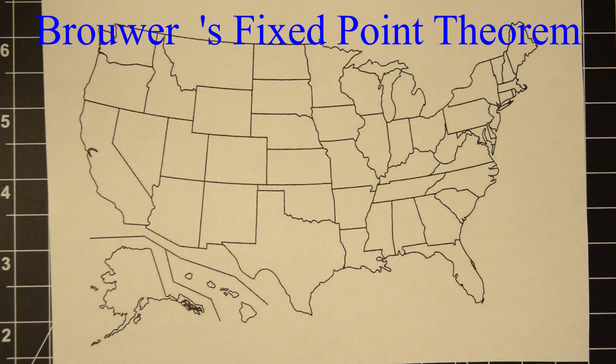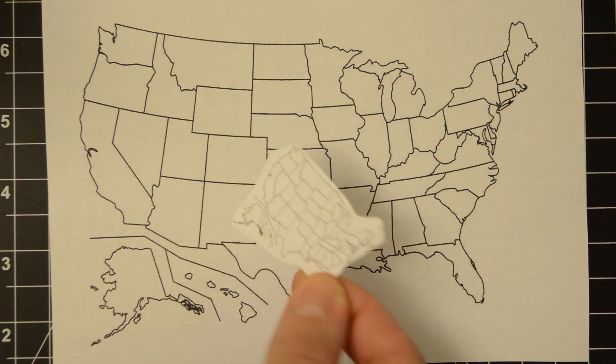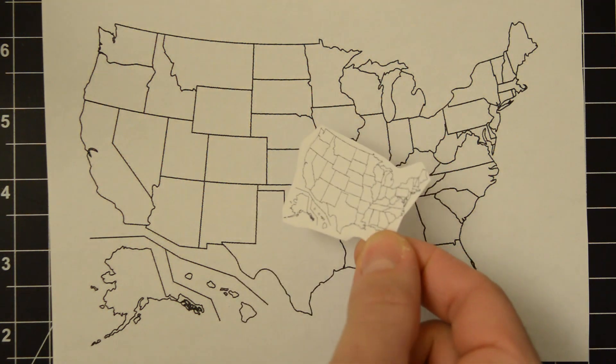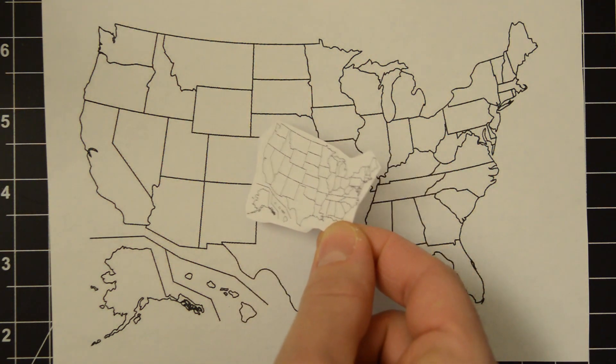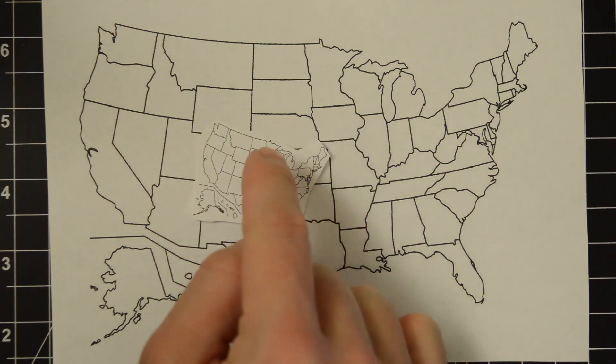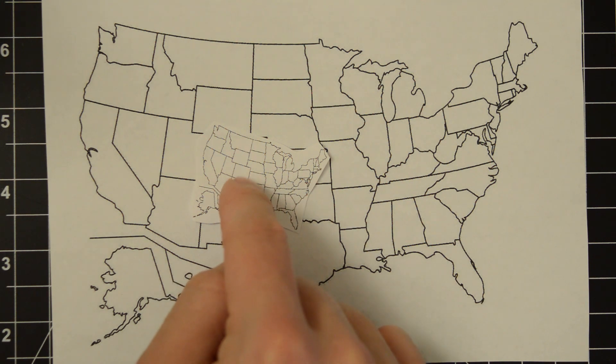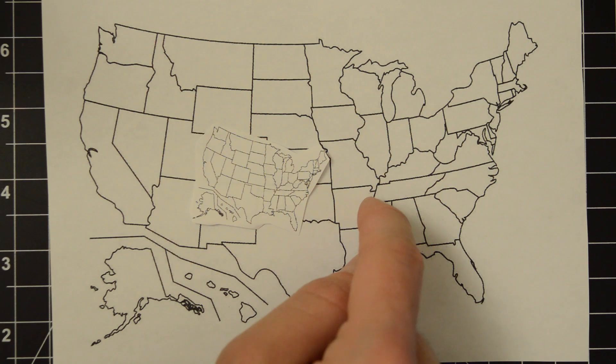And what I have here in my hand is a little miniature map of the United States. And there's an interesting relationship between these two maps. So if I take the little map and I put it on top of the big map, there will be exactly one point inside this map that is in the same place as it is in this map.